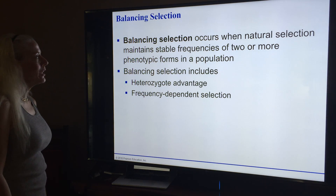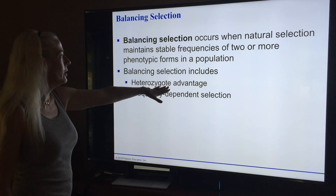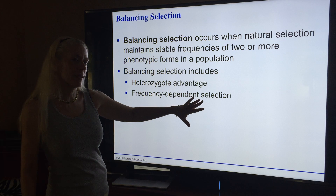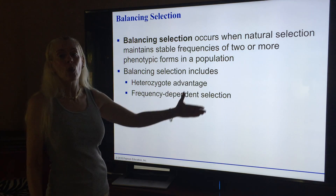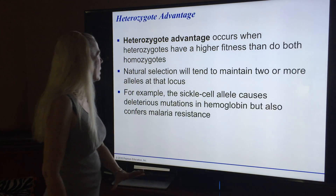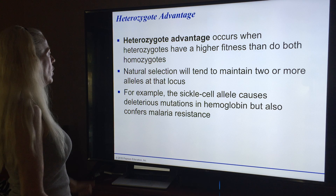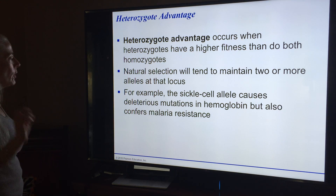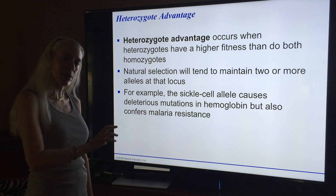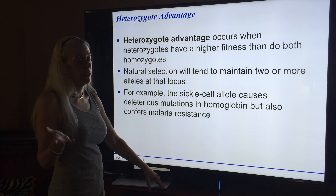Balancing selection is when natural selection maintains stable frequencies of two or more phenotypic forms. An example is heterozygous advantage — this brings up sickle cell, which you need to learn all you can about because you can use it in about 90% of the questions they'll ask. Heterozygous advantage occurs when heterozygotes have higher fitness than both homozygotes. The sickle cell allele causes bad mutations in hemoglobin but also confers malaria resistance — great if you're in areas with malaria, not so great otherwise.